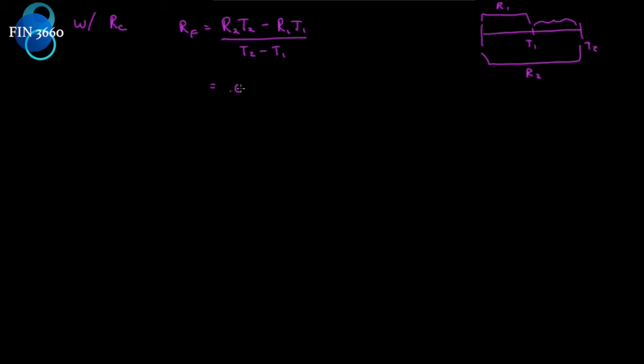R2, remember was 0.04, T2 is 3 years, minus R1, remember we said that was 3% and how long was that? That was a 2 year rate times 2. Over, T2 is 3 years out, T1 is 2 years out. So, we get 0.12 minus 0.06 over 1, which equals 0.06, or 6%. So, we can just solve it directly that way.